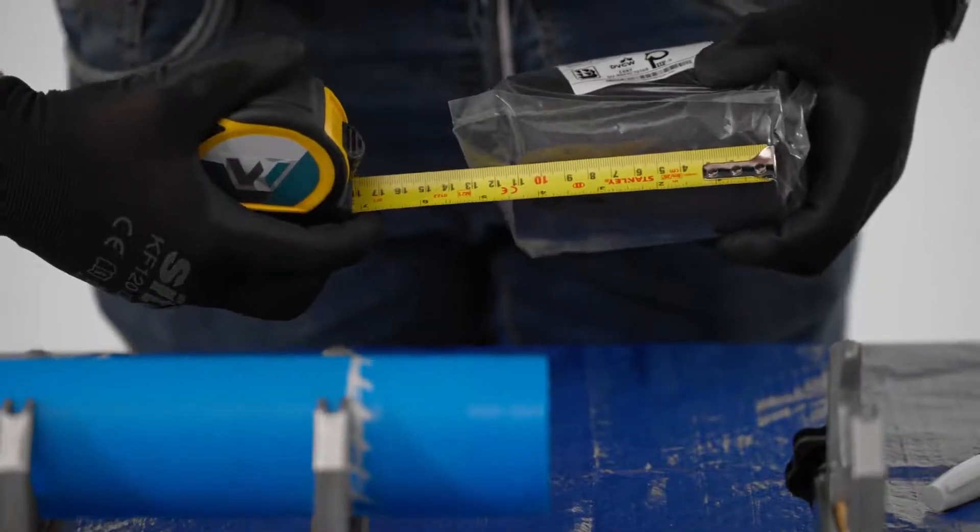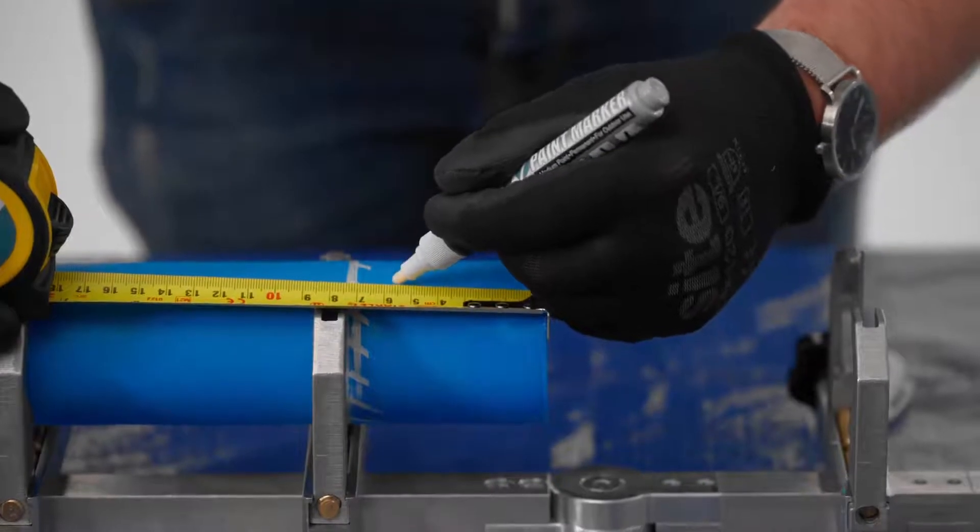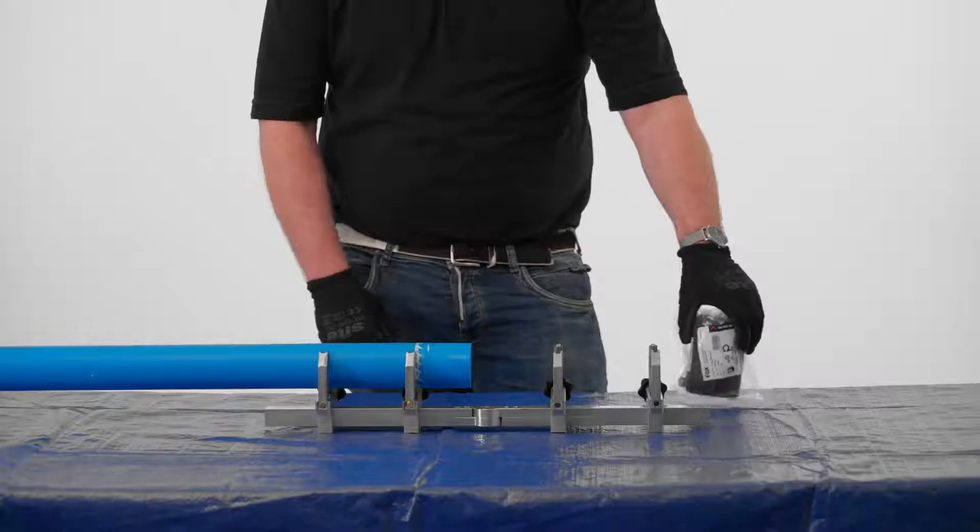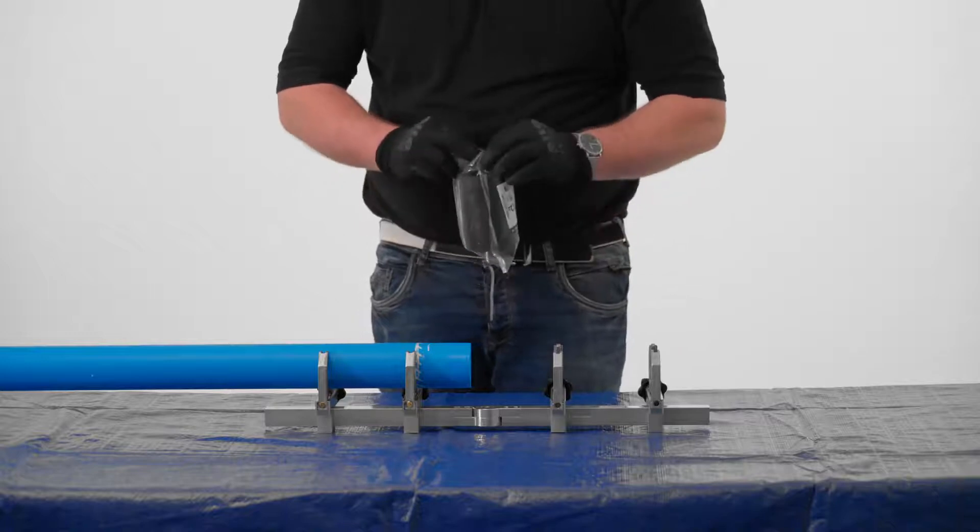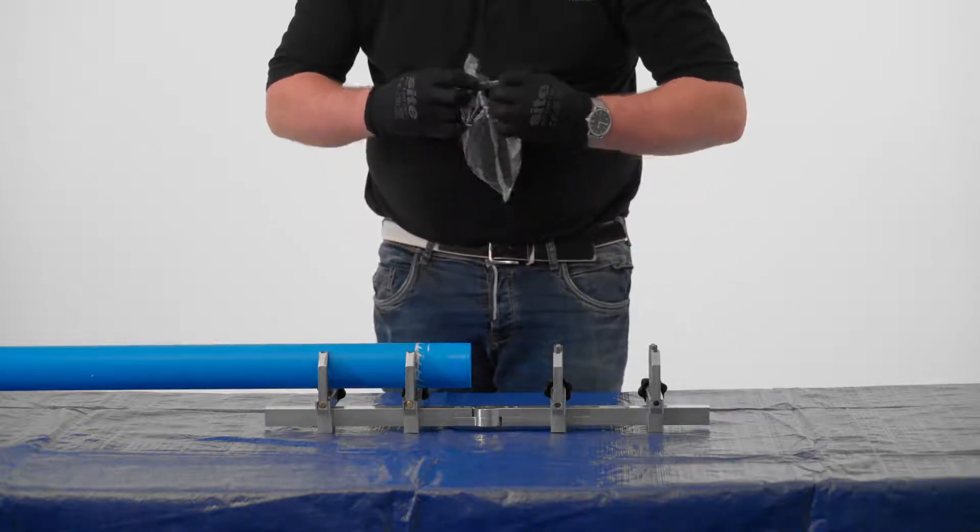Measure half of the length of the fitting and put an accurate insertion depth mark on the pipe. Take a fitting and carefully open the bag, but do not touch the inside of the fitting.